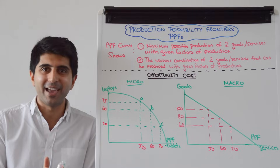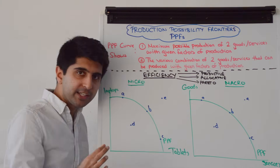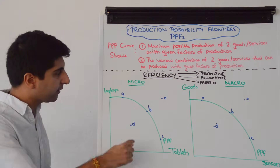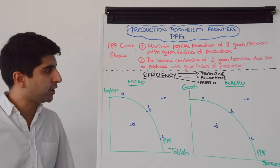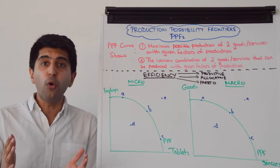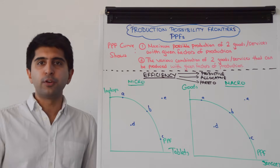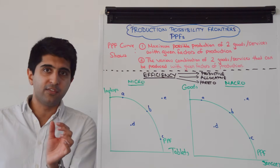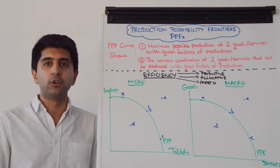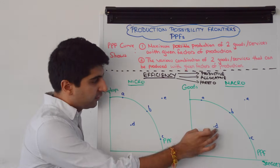Let's understand how we can show efficiency on PPFs. There are three types: productive efficiency, allocative efficiency, and Pareto efficiency. Any point on the curve is productively efficient — we are using all factors of production to their maximum level, getting maximum production with no waste and no unemployment of resources. Any point inside the curve is productively inefficient: we are wasting our factors of production. On a macro level, a point inside the curve can represent unemployment of labour or capital.